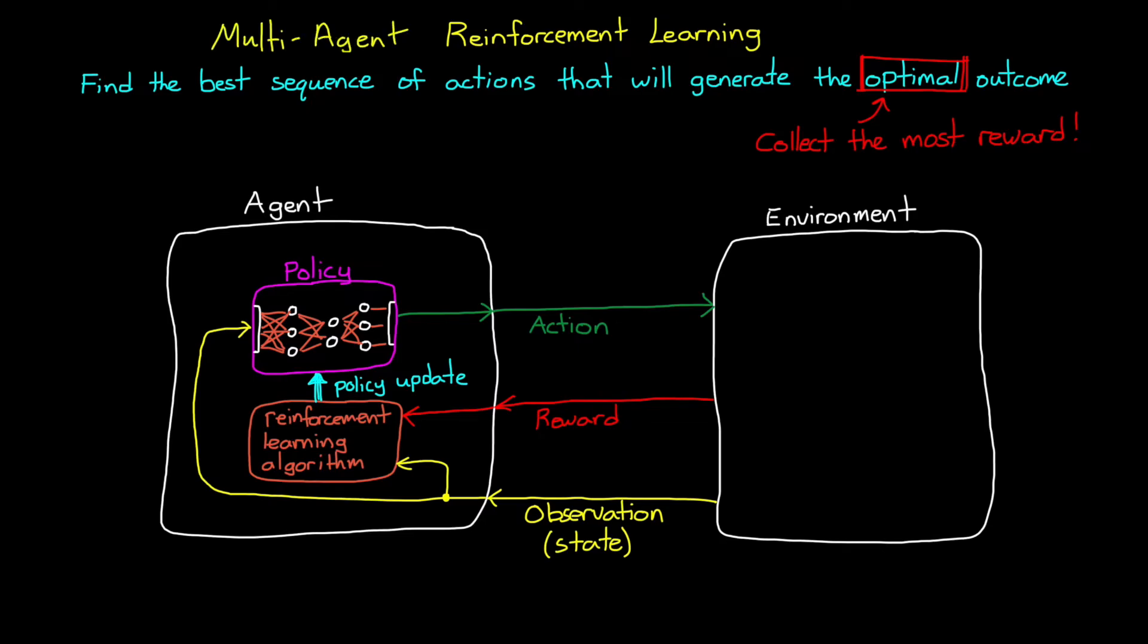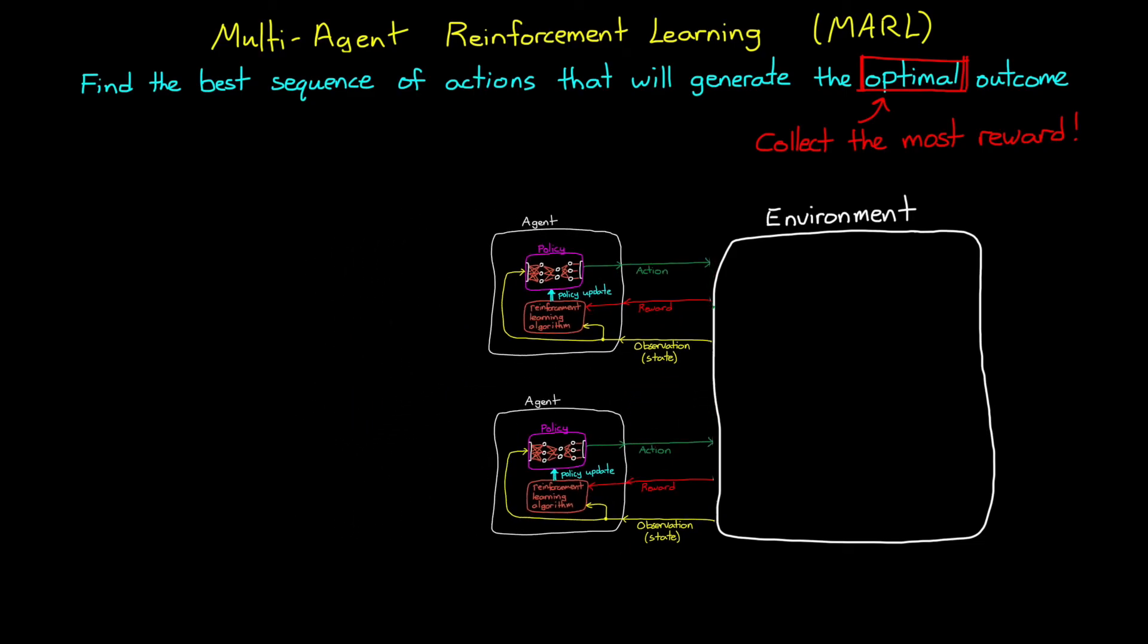So, the idea behind multi-agent reinforcement learning, or MARL, is that we have multiple agents interacting with an environment, and each of those agents are using some form of reinforcement learning to update their policy over time. Now, as soon as we have multiple agents that are each learning and interacting with each other, we start to introduce a few challenges that we have to overcome. And, to give you a sense of just a few of those challenges, let's set up this sort of toy example.